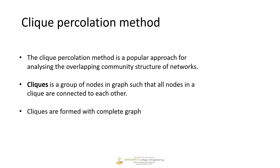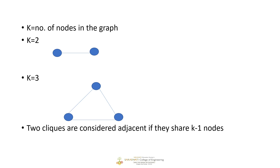Before understanding CPM, let's first see what a clique is. A clique is a group of nodes in such a way that all nodes in a given graph are connected to each other. Cliques are always a complete graph. In cliques we have a value called k, where k is equal to the number of nodes.